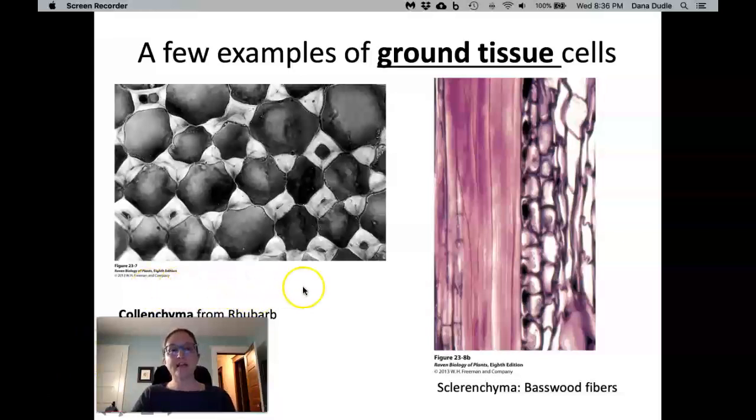So I'm going to tell you about parenchyma tissue, but first I want to at least mention the other two types of ground tissue. First we have colenchyma from rhubarb. Colenchyma cells have the structure of having only primary cell walls, not secondary cell walls. Colenchyma cells are alive at maturity, and their cell walls are unevenly thickened, which means they're very flexible. So that means that some of the cell wall areas are very thin, and some of them are thick.